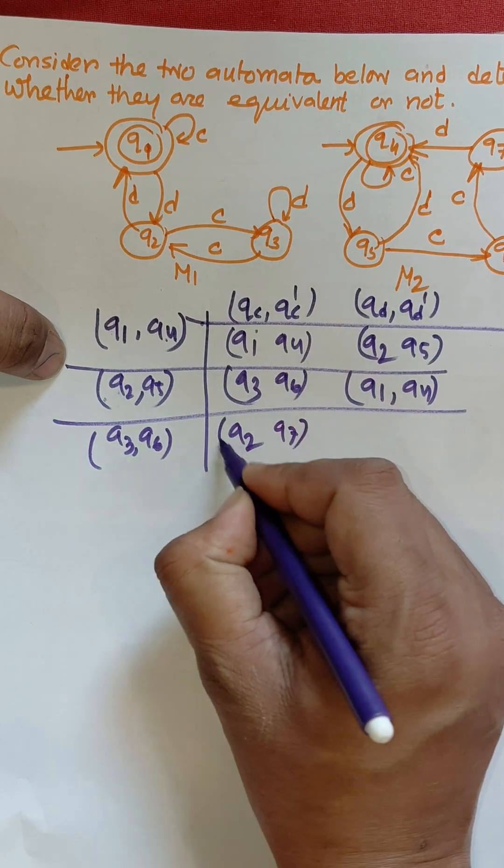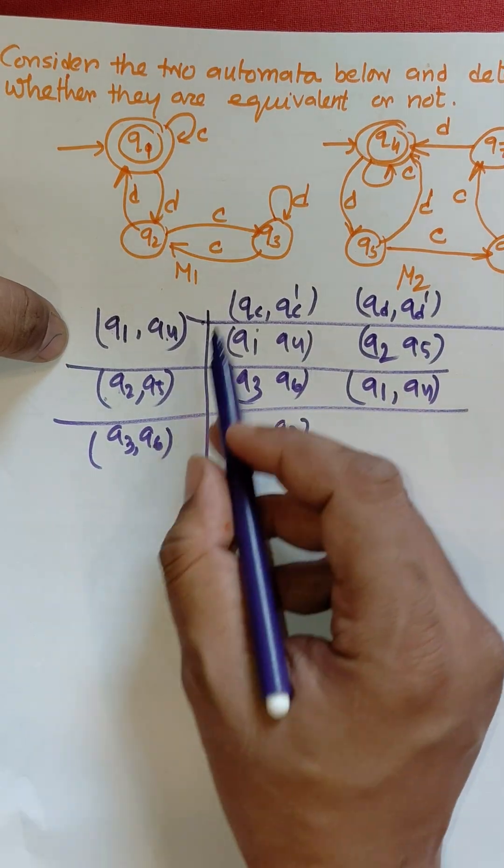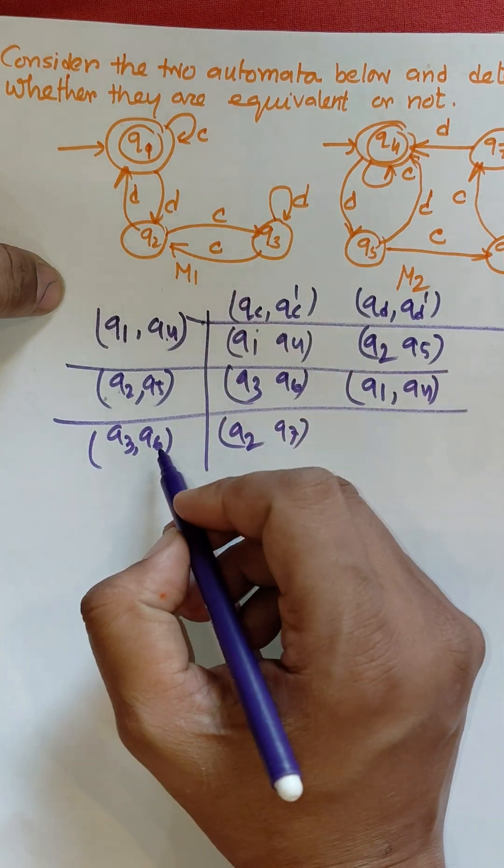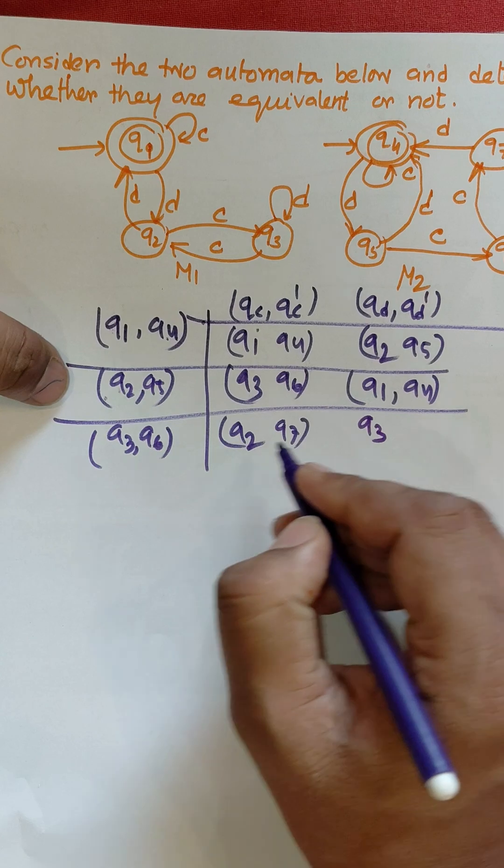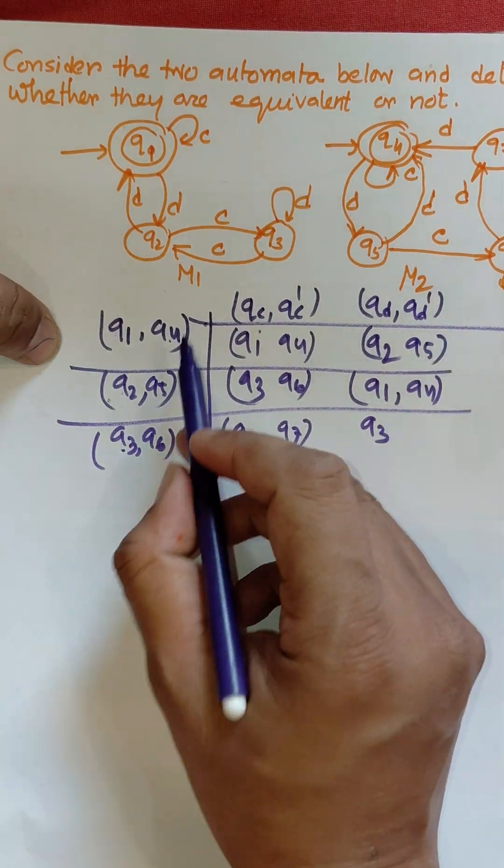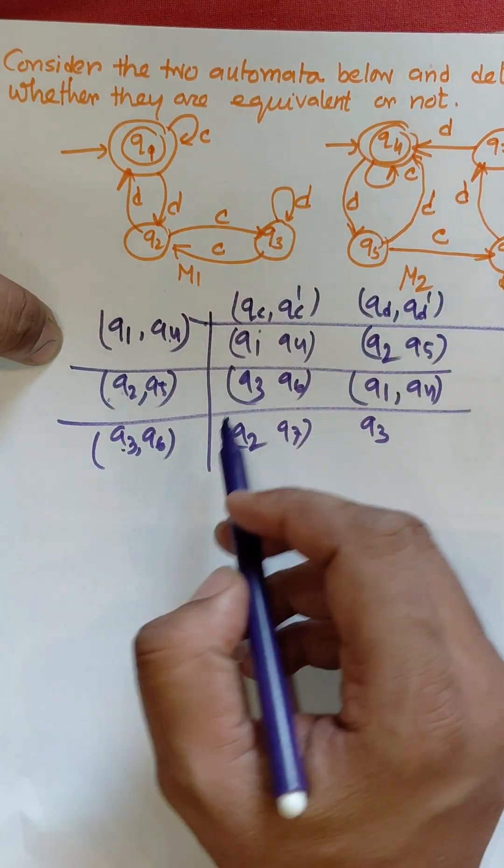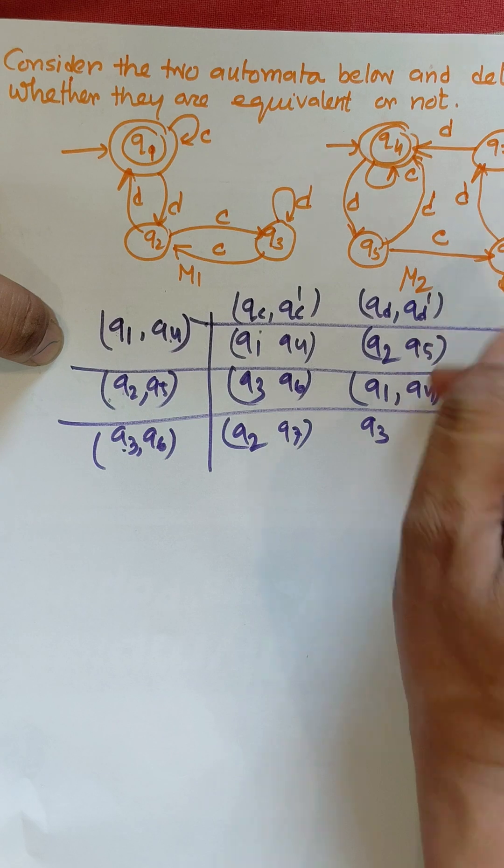For q3 to d, output is q3. For q6 to d, output is q7. Both are non-final, so no problem.